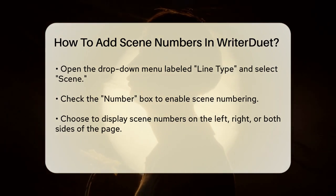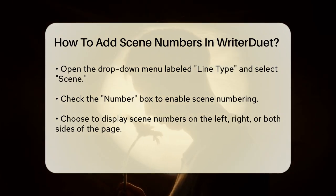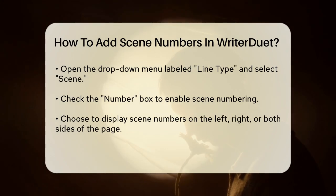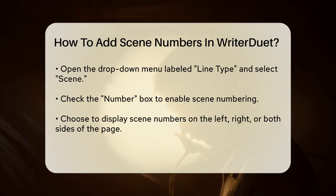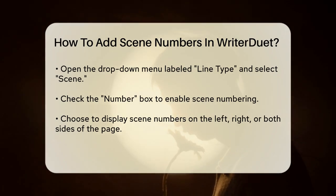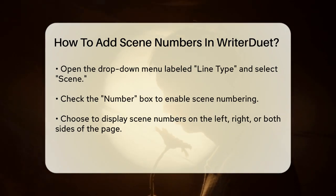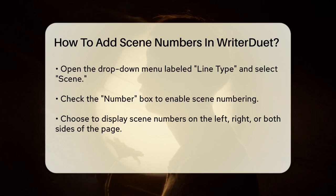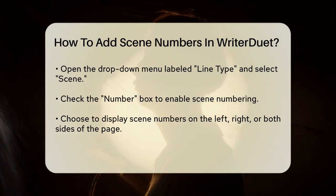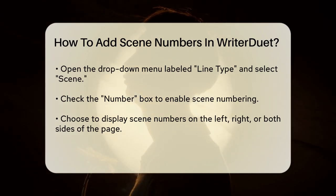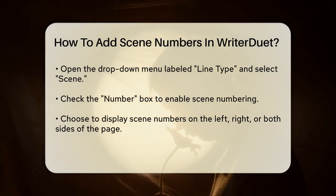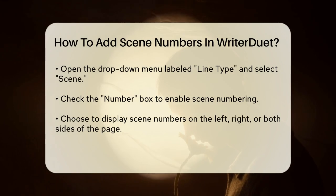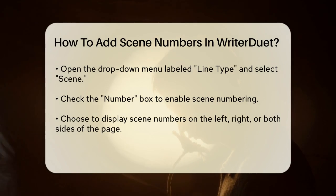Next, you'll see a checkbox below the Line Type menu that says Number. Check this box to enable scene numbering. As soon as you do this, you'll have the option to display the scene numbers on either the left or the right side of the page, or both. You can also choose where to start the numbering.